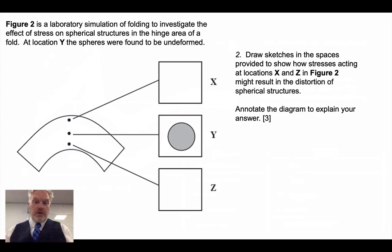For the second part of the question then, you're asked to draw sketches in these spaces. Let's just fill those in. So at point X, the circle is stretched into an oval shape parallel to the bedding surface, because we have tension at the top of the bed in an antiformal hinge.